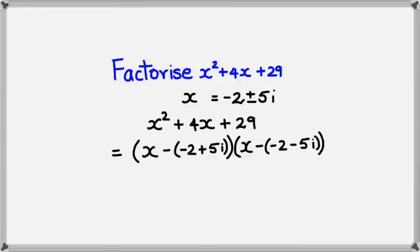There we go. Now you can, of course, leave it at this point, or you can simplify it further. So simplifying it further, I'm going to get (x + 2 - 5i)(x + 2 + 5i). And there we go. It's been factorized in the complex plane.